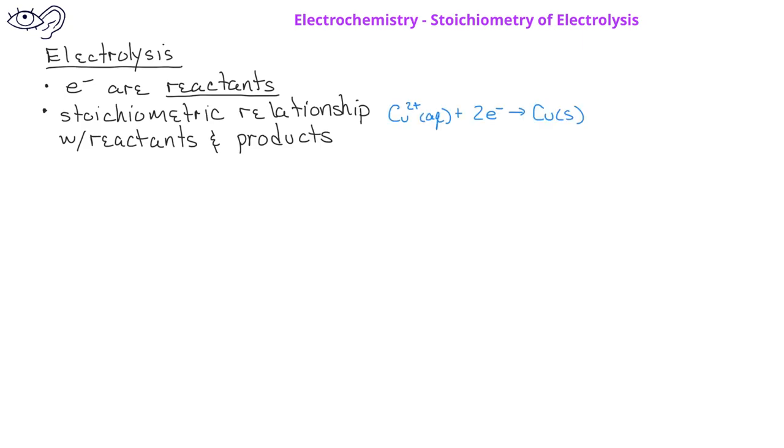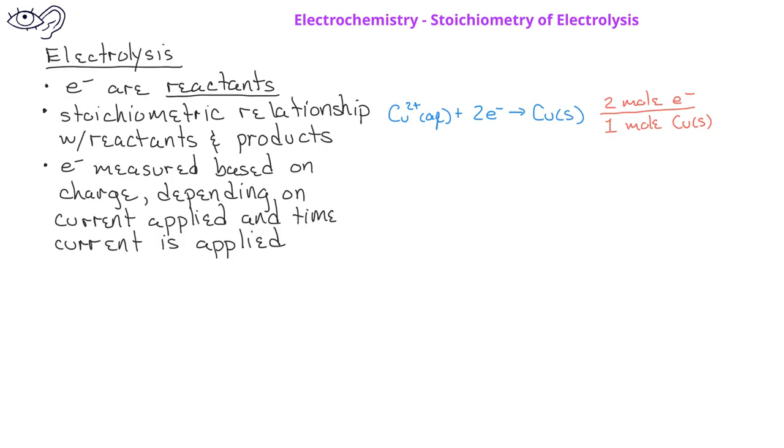we see that there are two moles of electrons for every one mole of copper metal produced. The electrons are usually measured as an amount of charge. Since electrical current is defined as the amount of charge in a given time, the amount of electrons transferred is related to the current applied and the time the current is applied.